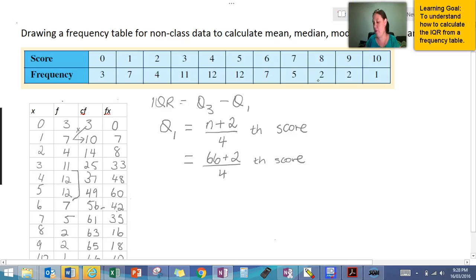Don't forget to do the top first before you do the bottom, otherwise you could make an error. So 68 divided by 4 is 17. So we are looking for the 17th score.